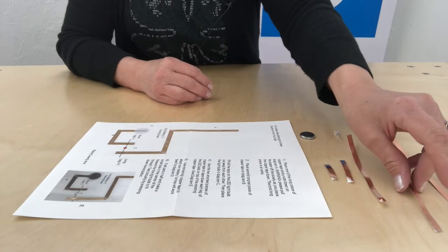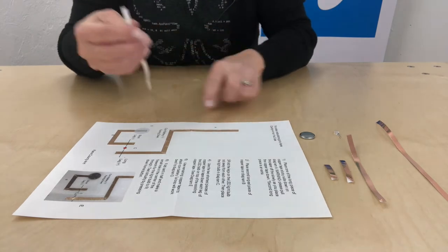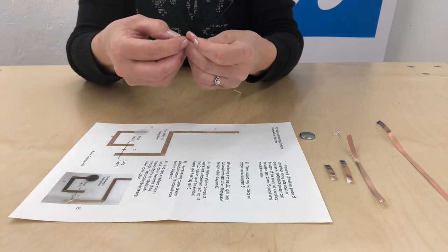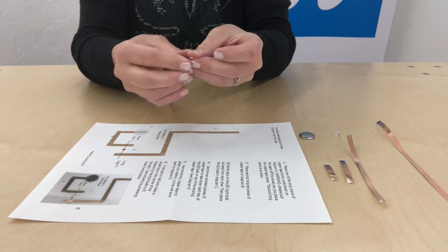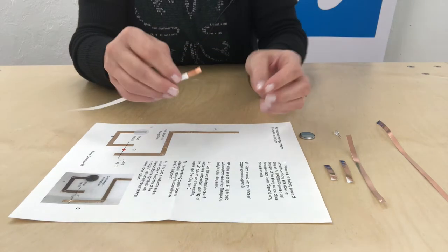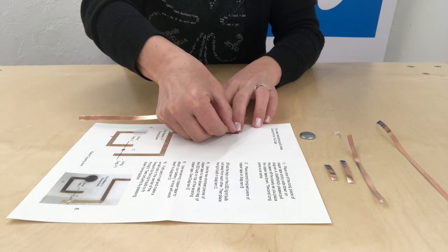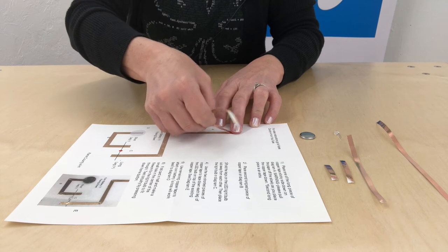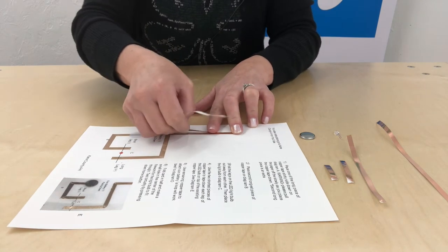For step number one, take one of your long pieces of copper tape and you'll place it on the paper on diagram A. When you peel back the paper on your copper tape, make sure you only peel back a little bit at a time so the copper tape does not coil up on you. To start out, just start at the top of the diagram, pressing the copper tape down as you go. Remember to go slow and only peel off a little paper at a time.